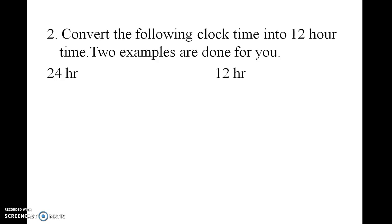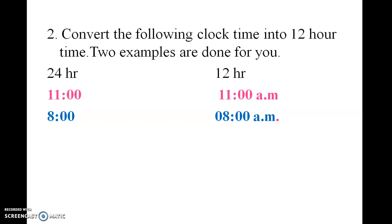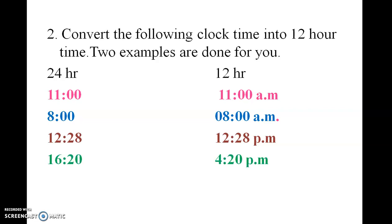Convert the following clock times into 12-hour time. Two examples are done for you. 11 hours is 11 AM. 8 hours is 8 AM. 12 hours 28 minutes is 12:28 PM. 16 hours 20 minutes is 4:20 PM.